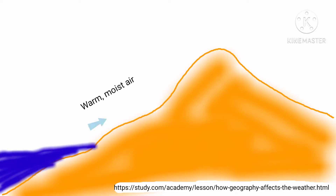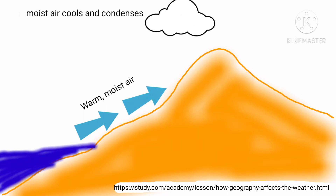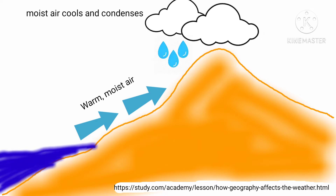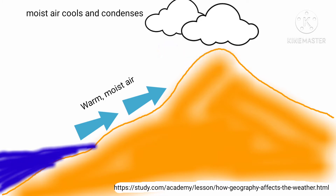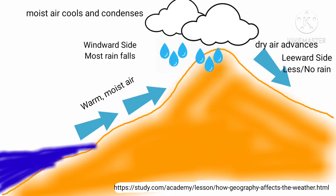Topographical features like mountains affect the weather mostly in the way that they direct air currents. For example, air is forced to rise over mountains. Moist air will cool as it rises, and then the clouds release the water, causing precipitation like rain or snow. This is why one side of a mountain range, the side nearest the ocean, often gets more rain.